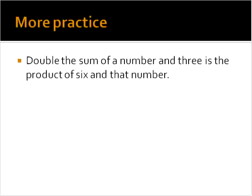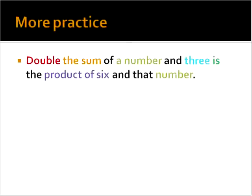Let's look at one that's a little bit more complicated. This one says double the sum of a number and three is the product of six and that number. That one sounds a little bit more complicated. We're going to use the same process. We're going to color code everything. In this one there happens to be a little bit more information. But when we color code all of the information we should be able to isolate exactly what they're asking for.